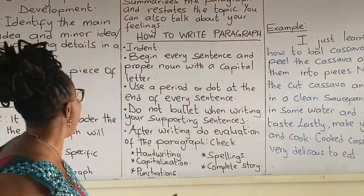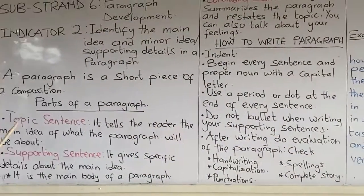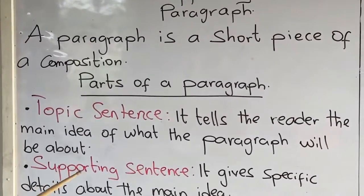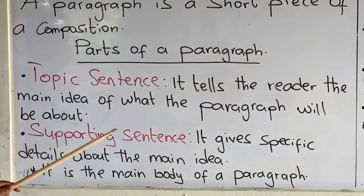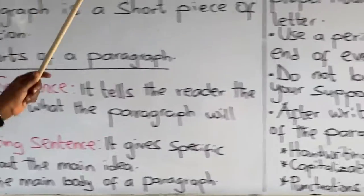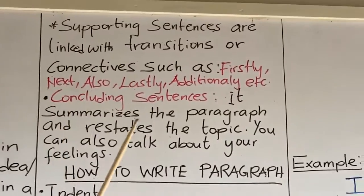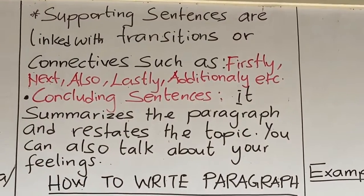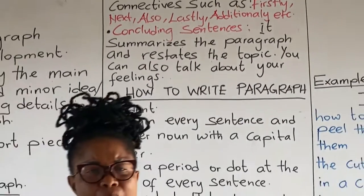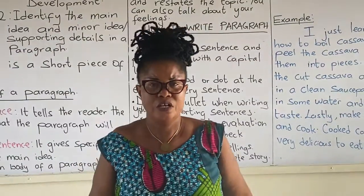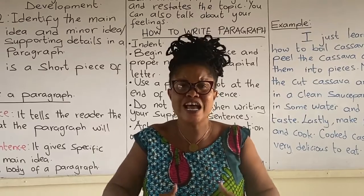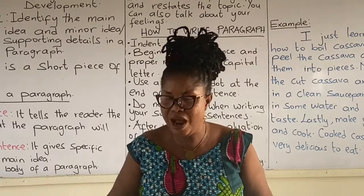So in a paragraph, we have three parts: the topic sentence, which tells the main idea of the paragraph; the supporting sentence, which gives supportive ideas to the main idea; and the concluding sentence, which summarizes the paragraph. Now let's look at how to write a paragraph — writing a paragraph has a specific form that it takes.